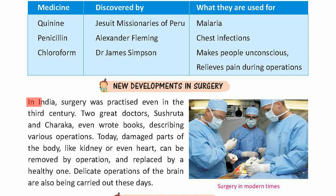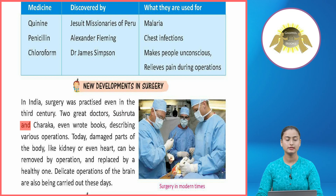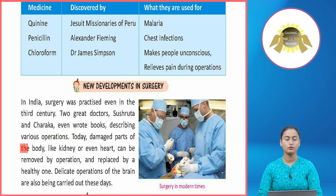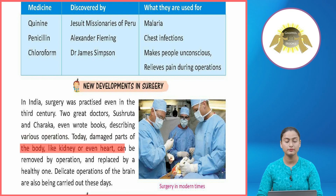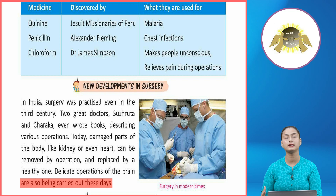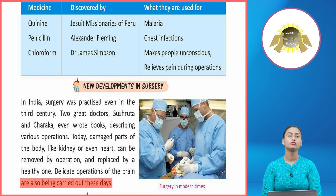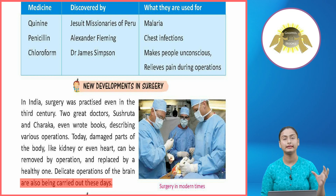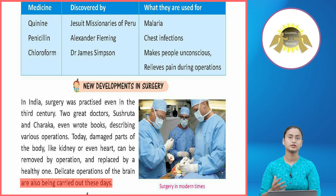New Developments in Surgery: In India, surgery was practiced even in the third century. Two great doctors, Sushruta and Charaka, even wrote books describing various operations. Today, damaged parts of the body like the kidney or even the heart can be removed by operation and replaced by a healthy one. Delicate operations of the brain are also being carried out these days. Organs like the heart, liver, kidney, and even the brain can now be transplanted with healthy replacements.